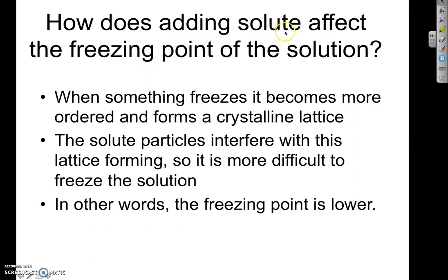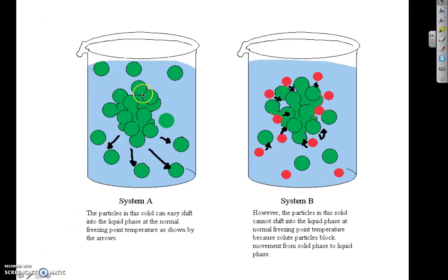Adding a solute to a solution also affects the freezing point. When something freezes, it becomes more ordered and forms a crystalline lattice — a very ordered solid. When you add solute particles, they interfere with the formation of that crystalline lattice, making it harder for the solution to become ordered and freeze. So the freezing point is lower than it would be for the pure solvent. The molecular picture shows solute particles coming in and interfering with solvent-solvent interactions, making it harder for them to come together and become a solid.